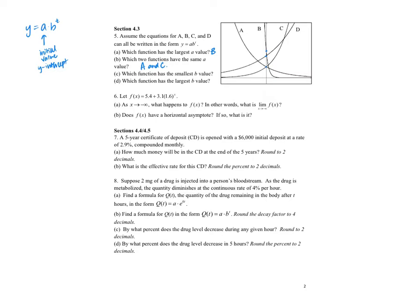Which function has the smallest b value? On the b value, that is telling us if b is greater than 1, it's going to be exponential growth. And if b is less than 1, it's going to be exponential decay. So I know for functions A and B, the b is less than 1 because those two are both the ones that have exponential decay. And if I look at function B, it decays faster than function A.